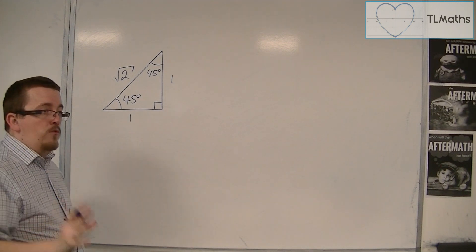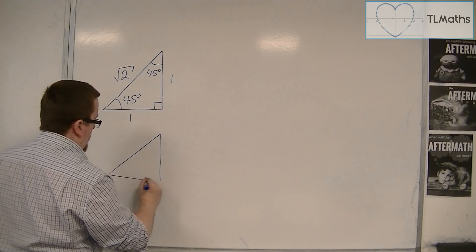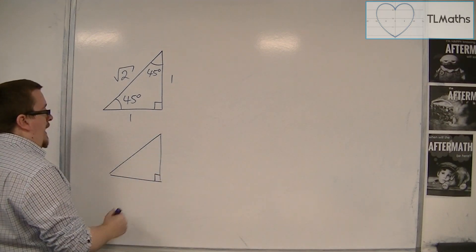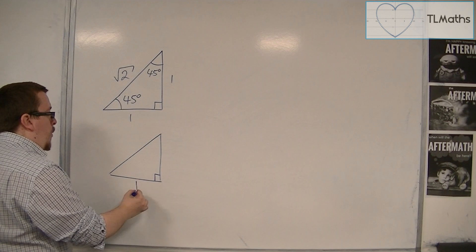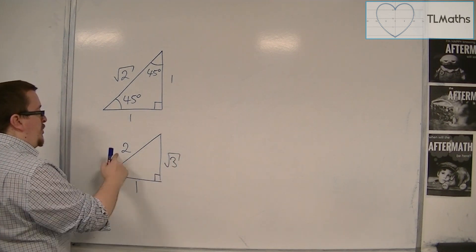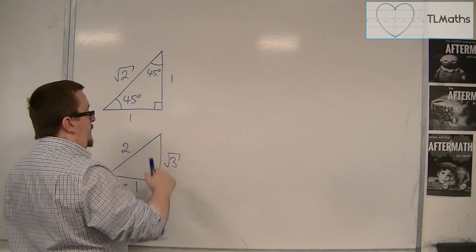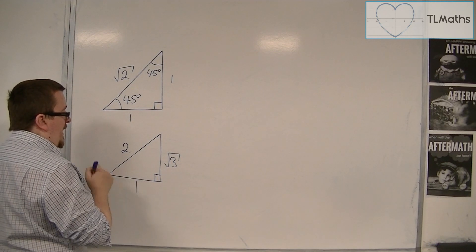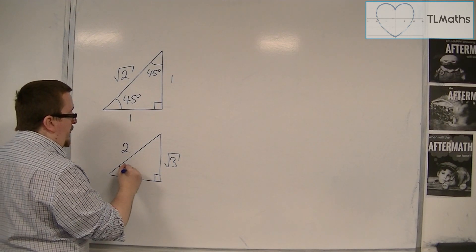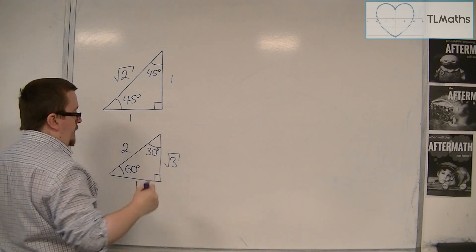The second triangle is also a right-angled triangle. And its lengths are 1, 2 and root 3. So 1, 2, 3 square root. Now this is the shorter side than that side. So this has a larger angle. And this one is actually 60 degrees. And this one is 30 degrees.